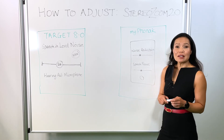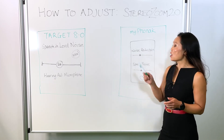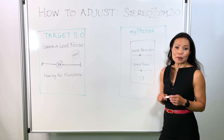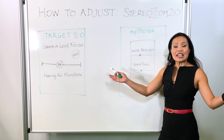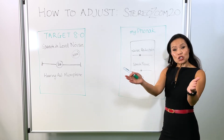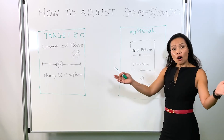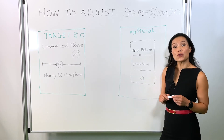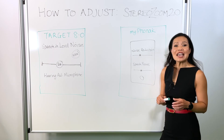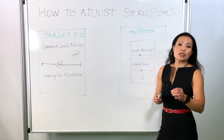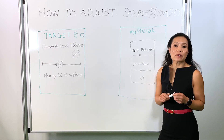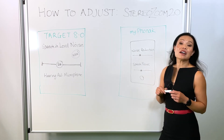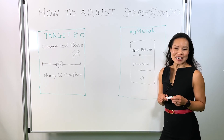For the end user, they have access via the My Phonak app. They can adjust the strength of stereo zoom via the speech focus slider, and they can even reduce the background noise via the noise reduction slider.